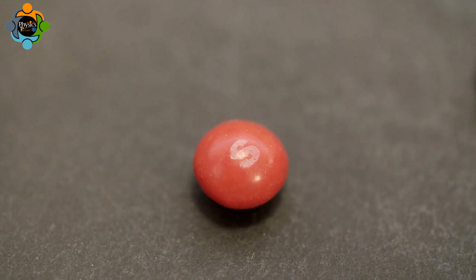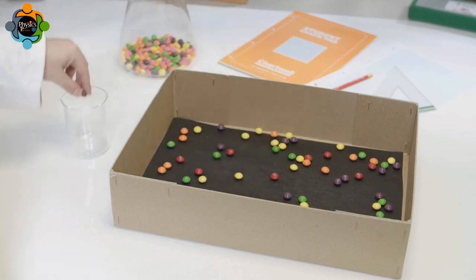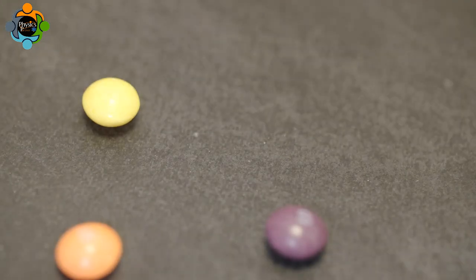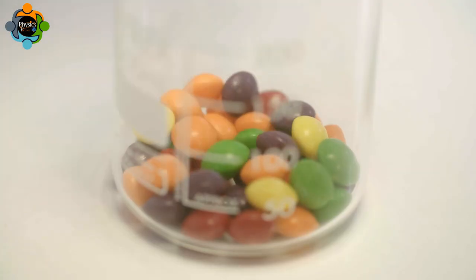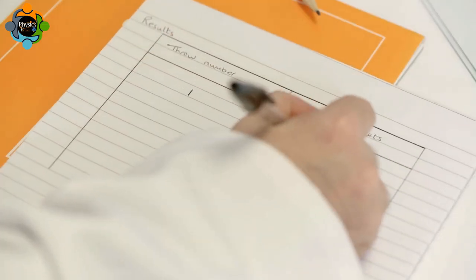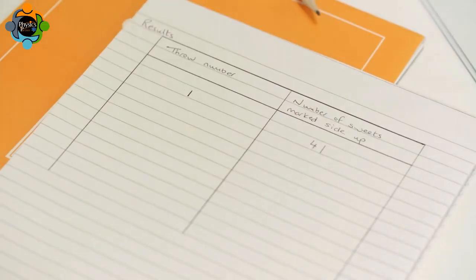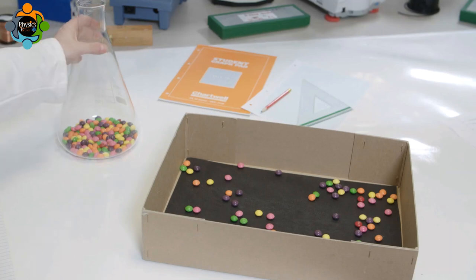The undecayed sweets will be thrown again, so they are picked out and placed back in the plastic cup or beaker. It is important to count the number of sweets picked out. The results of the first throw are recorded in a table by writing down how many sweets landed marked side up.